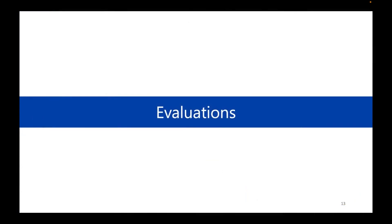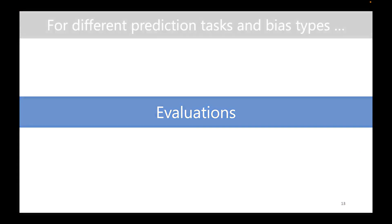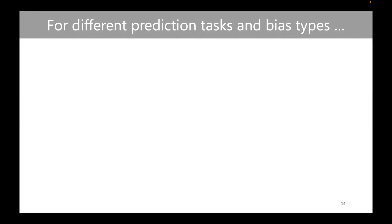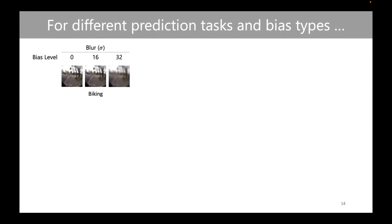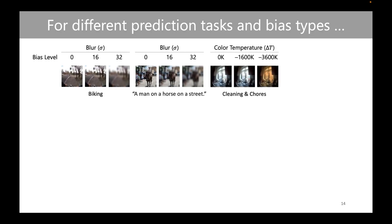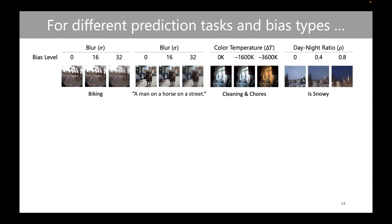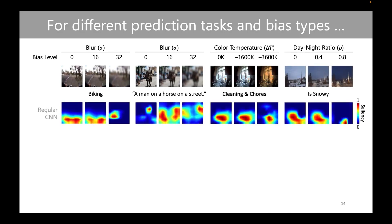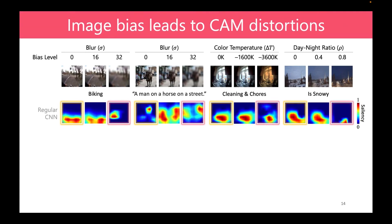Let's see how much CAMs are distorted, and how well Debiased CAM can help. We evaluated across different prediction tasks — image classification and image captioning — and different bias types, including synthesized biases such as image blur and color temperature shift, and natural bias such as day-to-night light change. Across all settings, image bias leads to CAM distortions, and relative to unbiased CAM, biased CAM becomes very misleading.